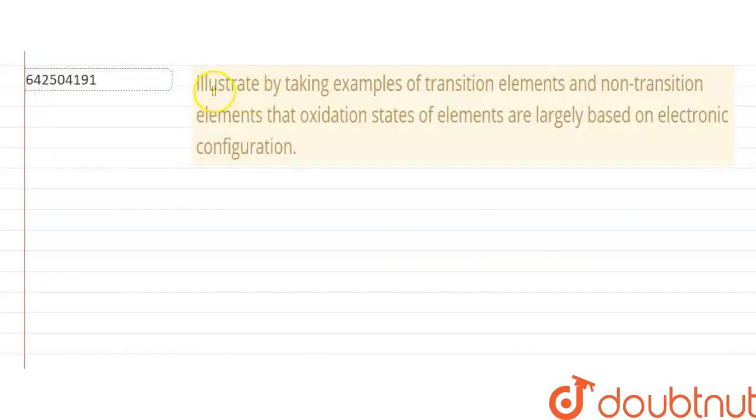Okay, so hello everyone. Now this question says that illustrate by taking examples of transition elements and non-transition elements that oxidation states of elements are largely based on electronic configuration.